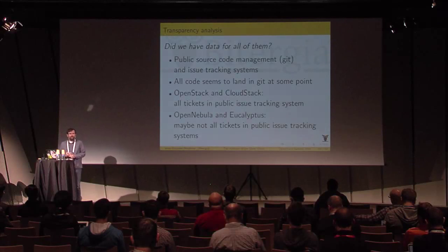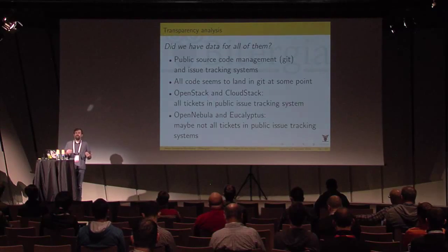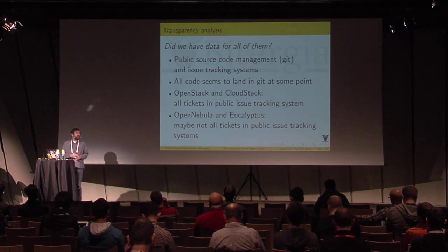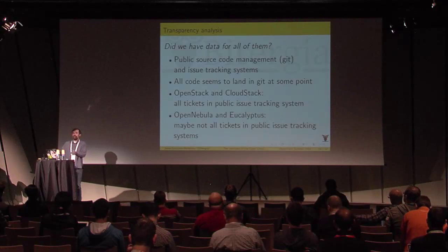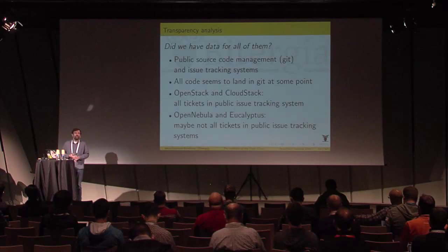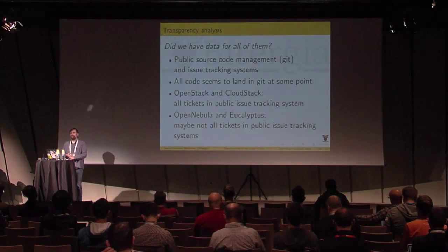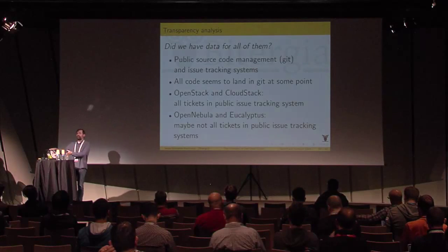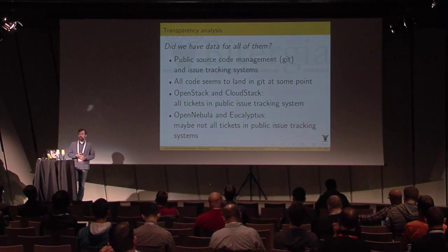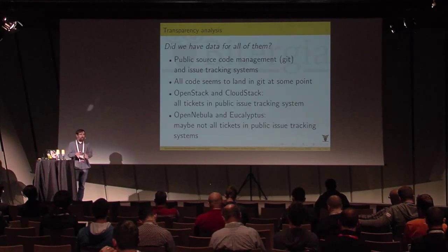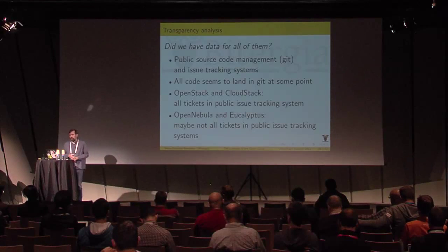To finish this introduction to the study, we also did a transparency analysis — to what extent these projects are transparent so that we can really understand how they are being developed. Not all open source projects provide enough information about how they are developed; some develop in-house and you don't have any information about that. In this case, we found that all four have public code management repositories using git, and it seems that development activity really goes on there — it's not just a matter of dumping code from time to time. All code seems to be there and that seems to be the main place for development.